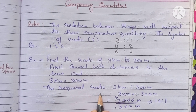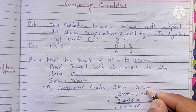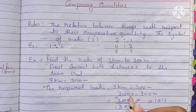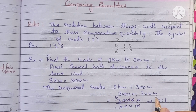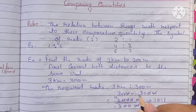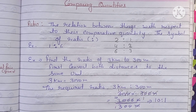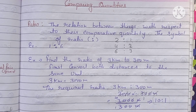The required ratio is 3,000 meters to 300 meters. Meters cancel with meters, and then we cancel the zeros: 3,000 to 300 simplifies. This gives us the ratio 10:1. So we start Exercise 8.1.